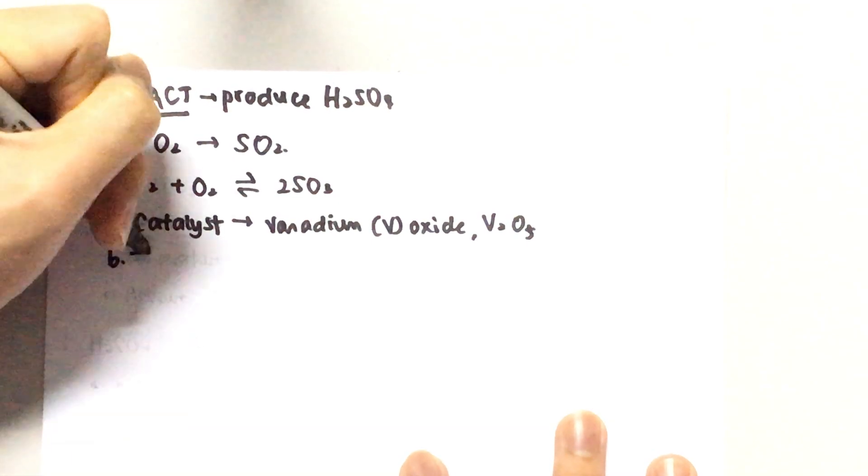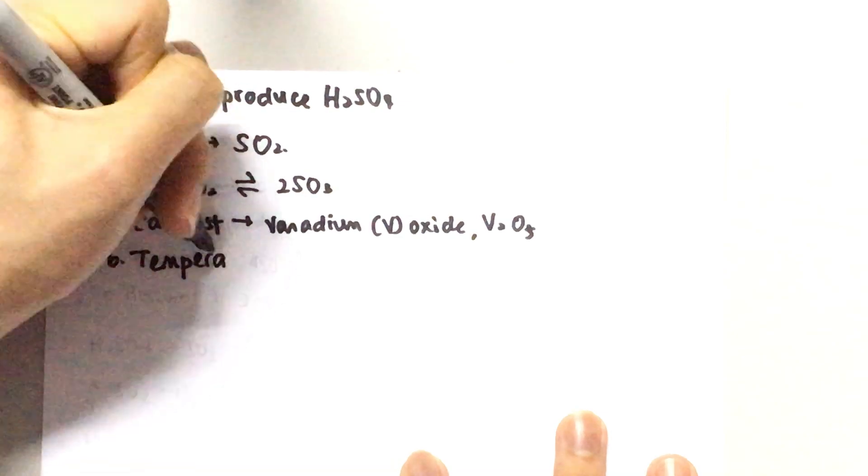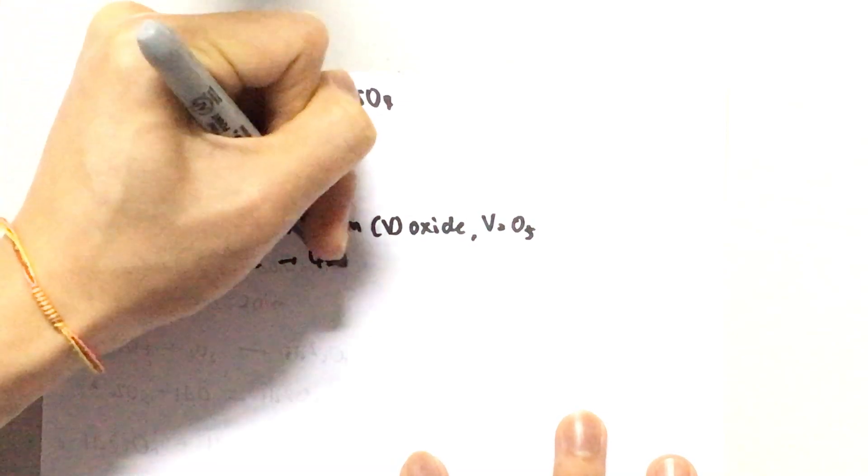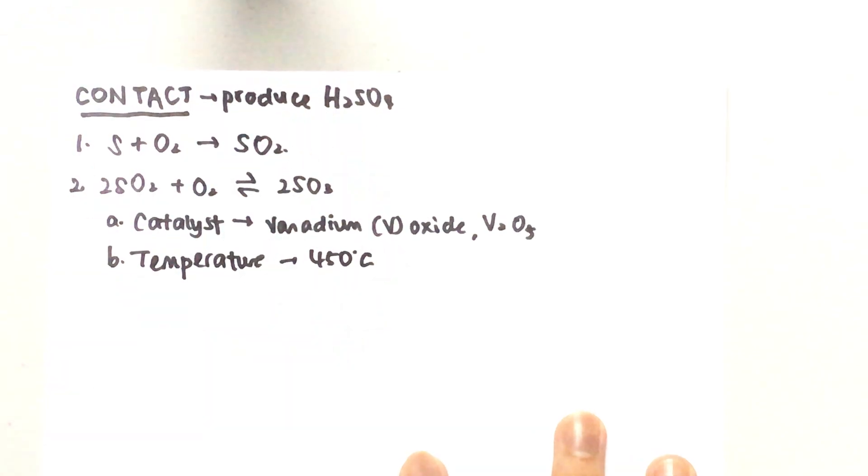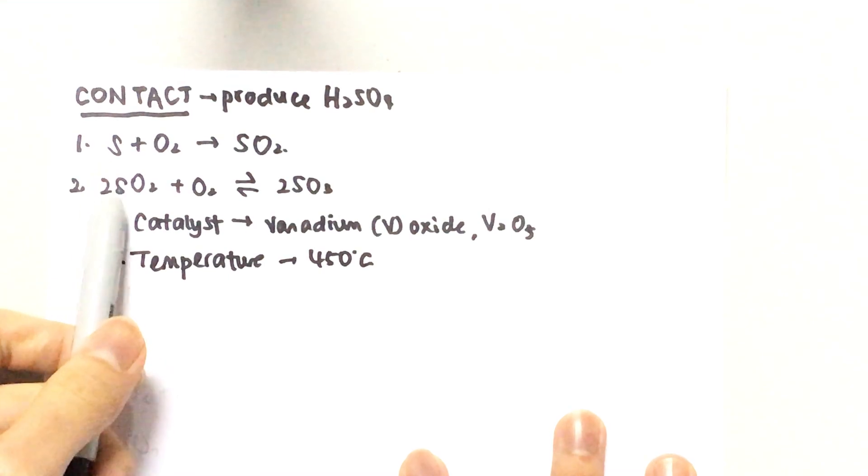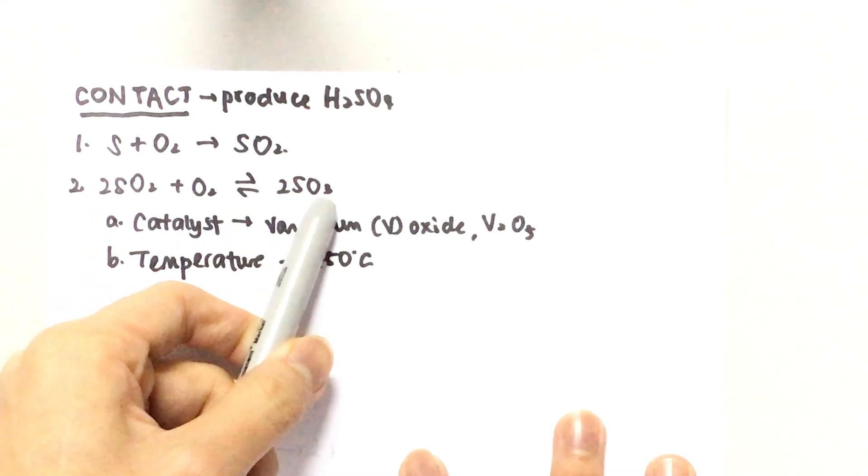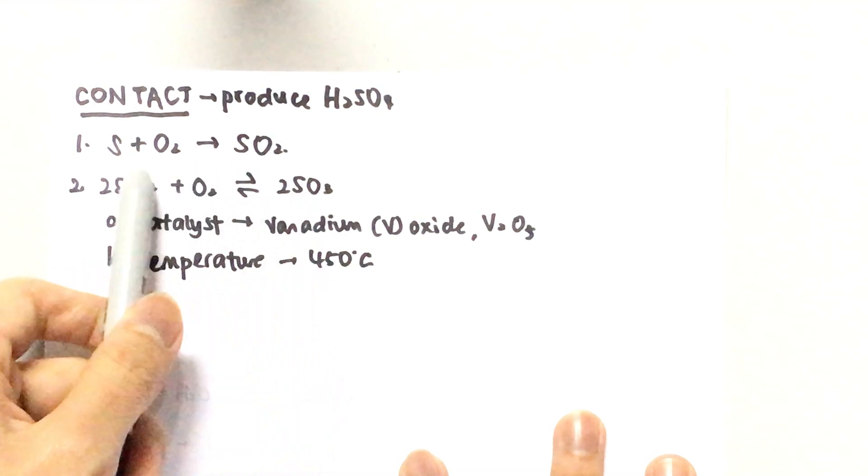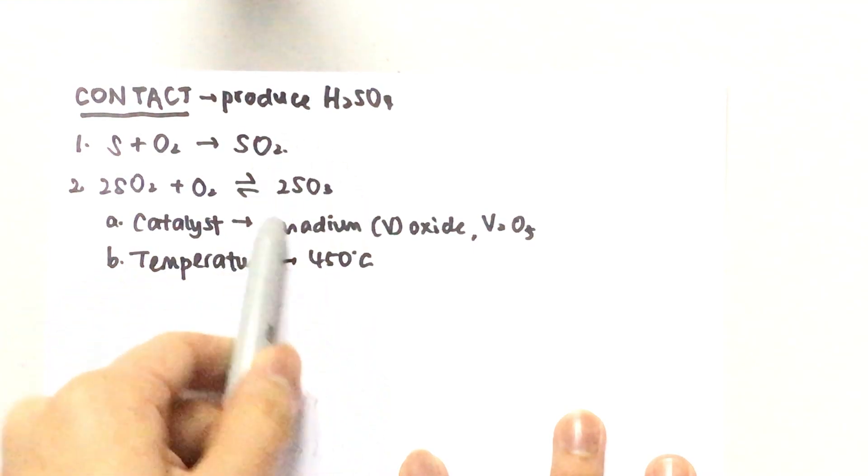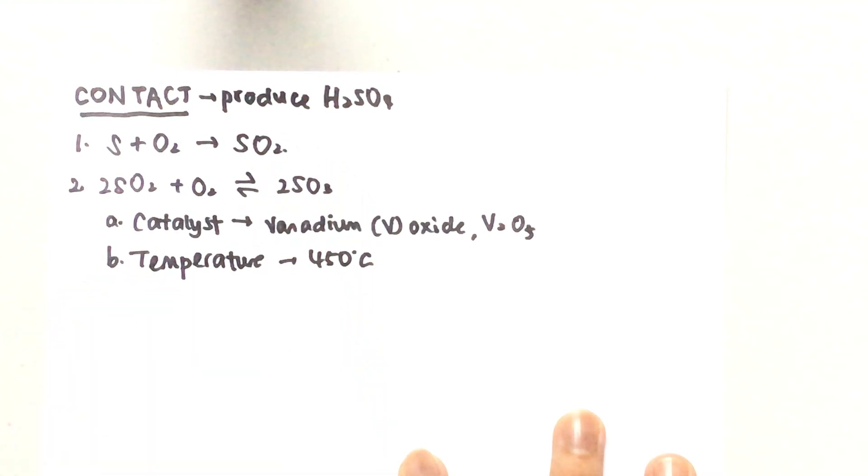The next one is the temperature, and we're going to use a temperature of 450 degrees. Why we're using 450 is because the forward reaction is exothermic, so ideally we would use a lower temperature so that we favor the forward reaction more and produce more sulfur trioxide. But if the temperature is too low, our reaction is going to be slow as well, so we're going to use the optimum temperature of 450.